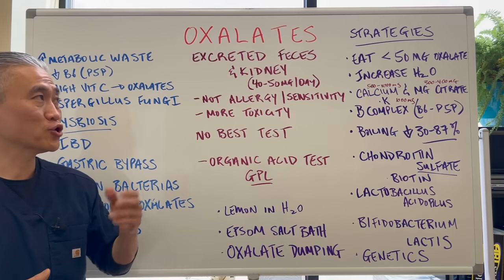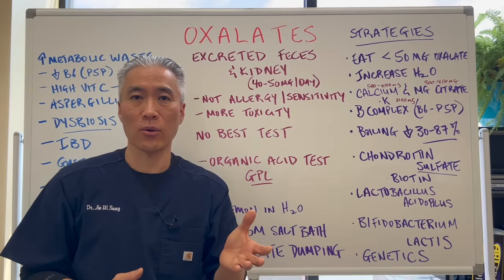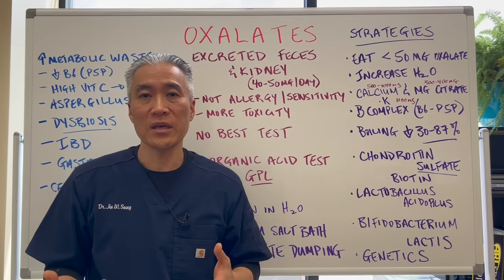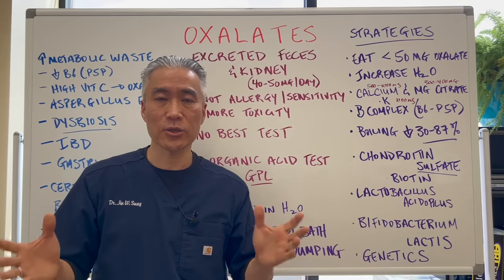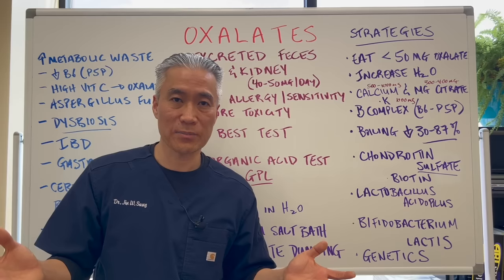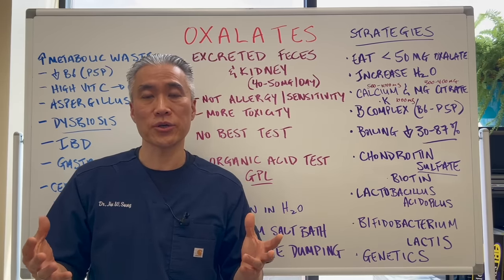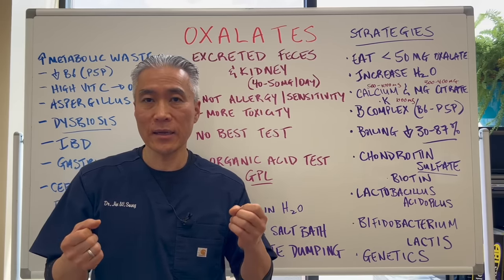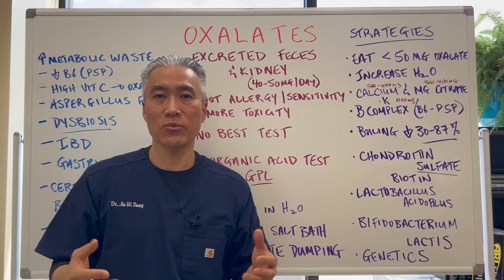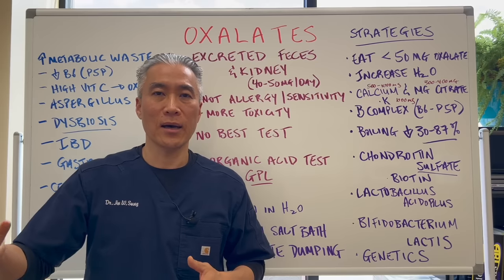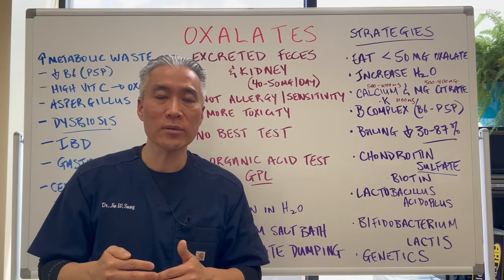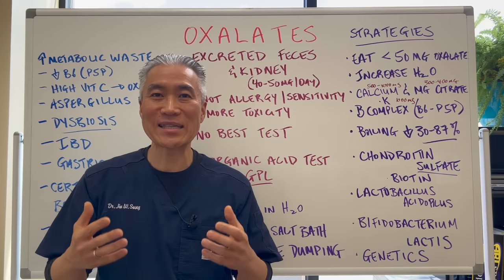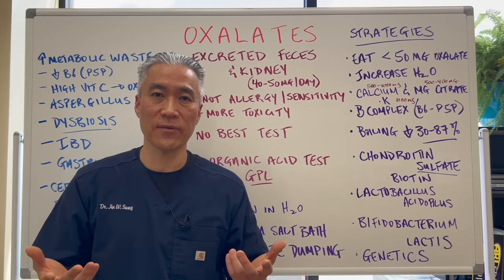Now, strategies. Before I talk about strategies, let's talk about what we call oxalate dumping. So if you have a lot of oxalates in your diet and high levels in your body, and you just go completely oxalate free — let's say you go carnivore and eliminate all these plants and seeds — your oxalate levels in your serum or blood will drop. That may cause your body to release oxalates that are embedded in the tissue, whether it's your intestinal lining, your kidneys, or your liver. When your serum level of oxalates goes down, your body will dump whatever oxalates are embedded in the tissue, creating symptoms related to oxalates. So you have to be very careful to prevent that from happening.